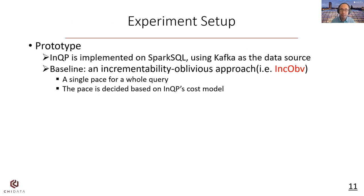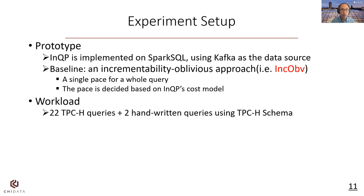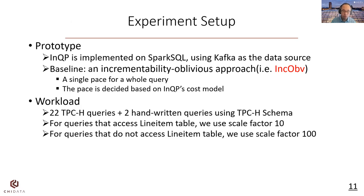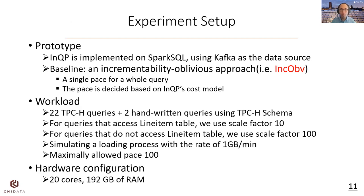We implement NQP on Spark SQL and use Kafka as a data source. We use the baseline of an incrementability-oblivious approach, which uses a single pace for the whole query, and the pace is decided based on NQP's cost model to meet the final work constraint. We use all 22 TPCH queries plus two handwritten queries using the TPCH schema. The line item table occupies 70% of all TPCH data. To ensure every query has a relatively large working data set and does not run out of memory, we use scale factor 10 for queries that access the line item table and scale factor 100 otherwise. We simulate a loading process at a rate of 1 GB per minute and set the max pace to 100. All experiments are run on a machine with 20 cores and 192 GB.